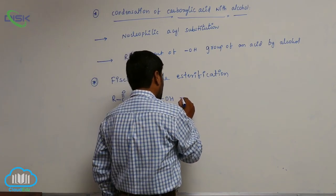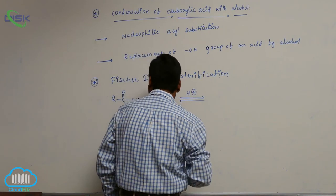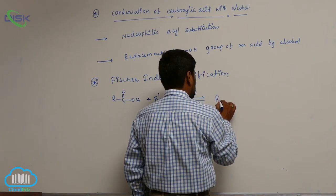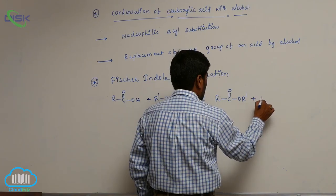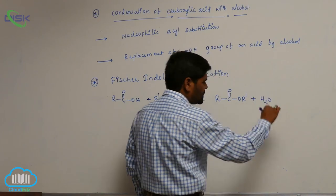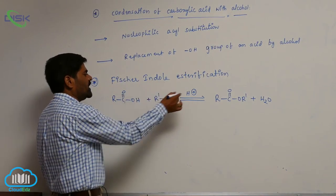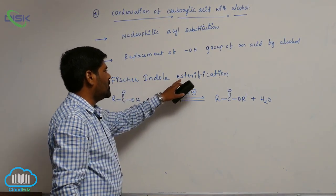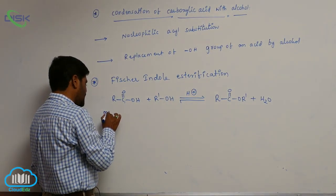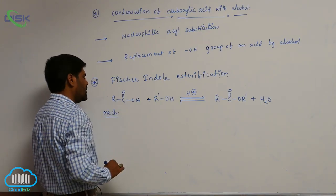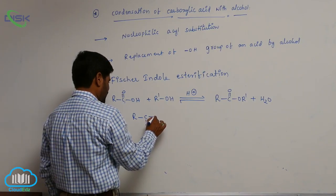When R-C(=O)-OH, a carboxylic acid, reacts with an alcohol in the presence of an acid medium, to form an ester with loss of a water molecule. This particular esterification is known as Fischer-Indole esterification.